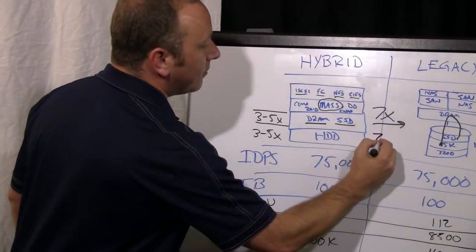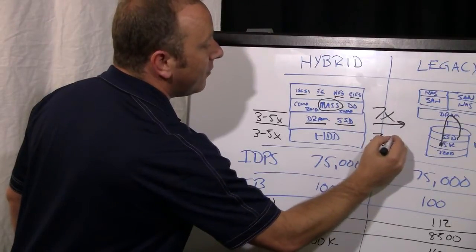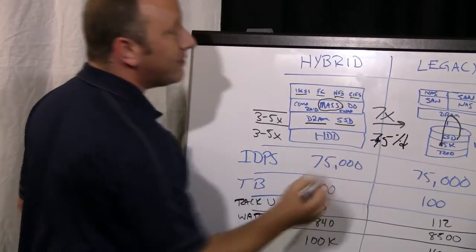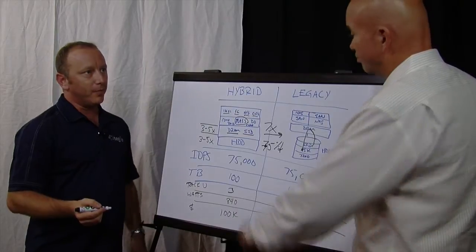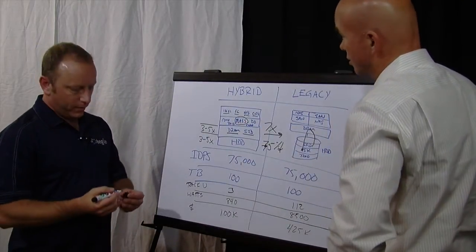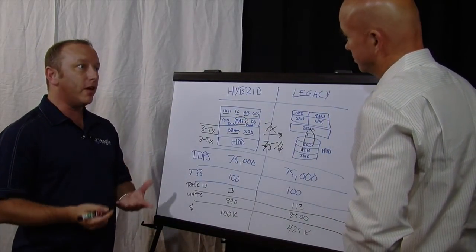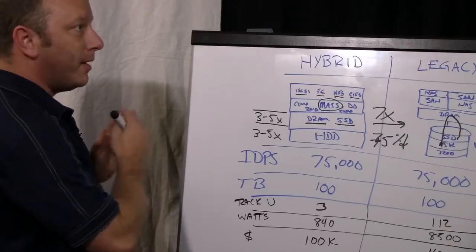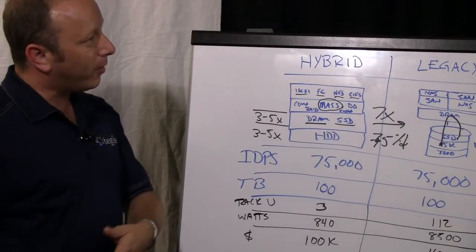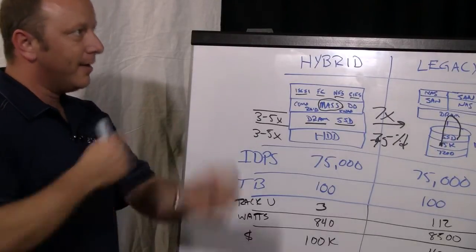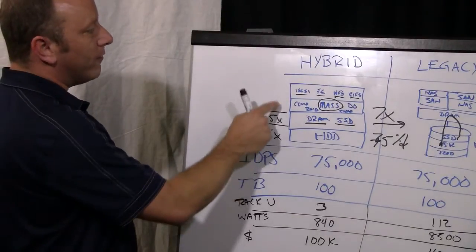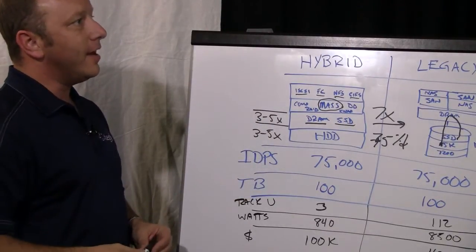And on average, customers are buying 75% less capacity than they typically do because of this compression and deduplication. Now those two things are typically held off for backup and archive or a post process that you've got to land the data, then grind on it. We do it very early in the data path.